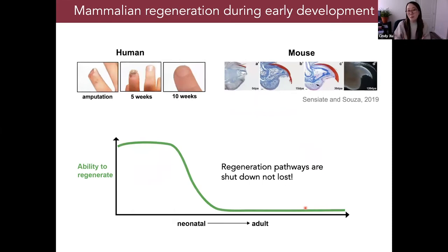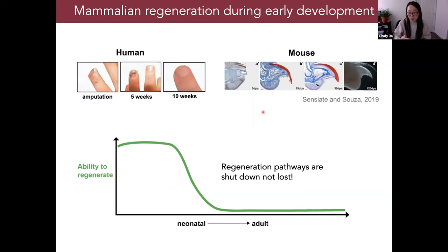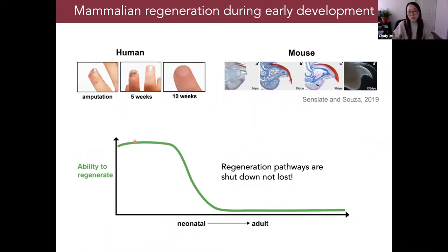Mammals do have some capacity for regeneration, and the closest we get to regrowing complex structures occurs during early stages of development. During neonatal stages, exemplified in both humans and mice, we're able to regrow digit tips if the very tip is amputated. During fetal stages, we also exhibit scarless healing due to cutaneous wounds. But as development proceeds, regenerative capacity is greatly reduced, likely because regeneration pathways are shut down — though importantly, these pathways are not actually lost.